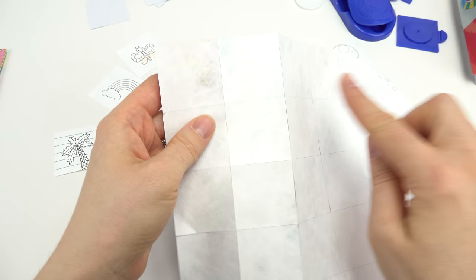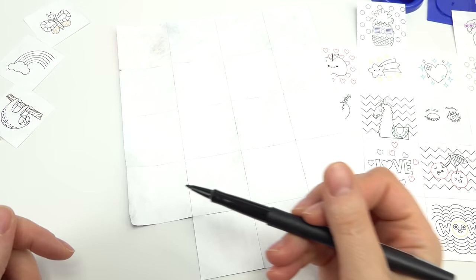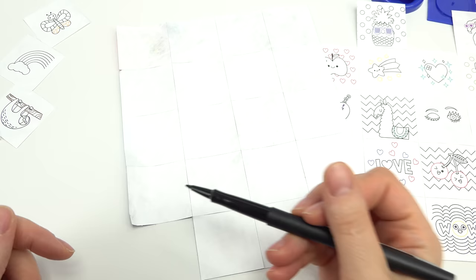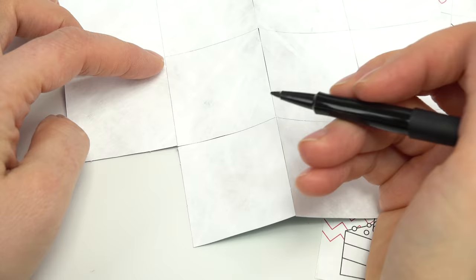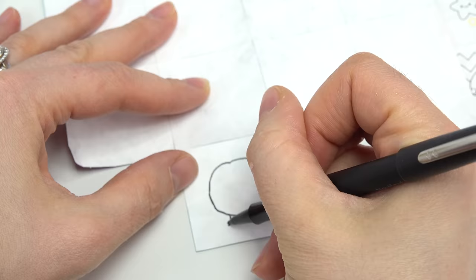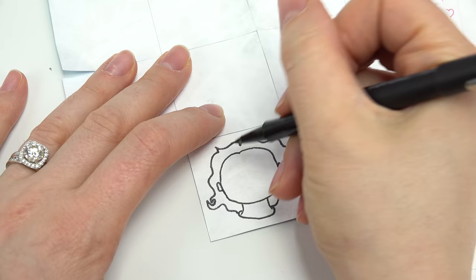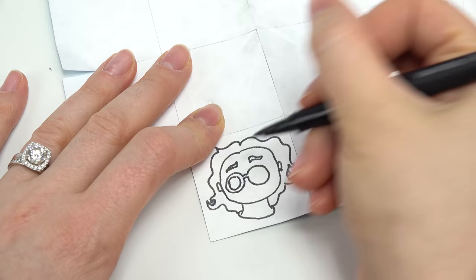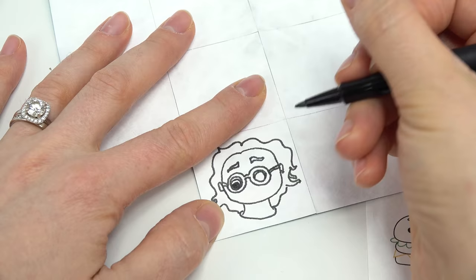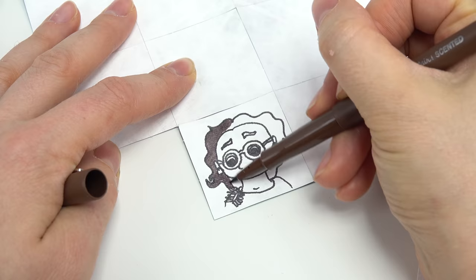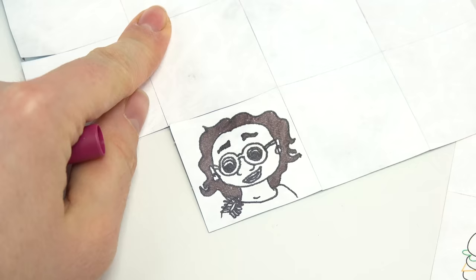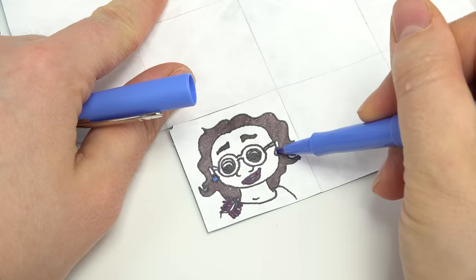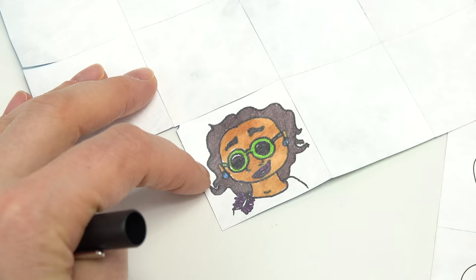I'm gonna flip these over and I'm gonna draw some Encanto images so we can use those. So I wanna create some characters out of these. Let's do Mirable first. Let me do an Isabella one.